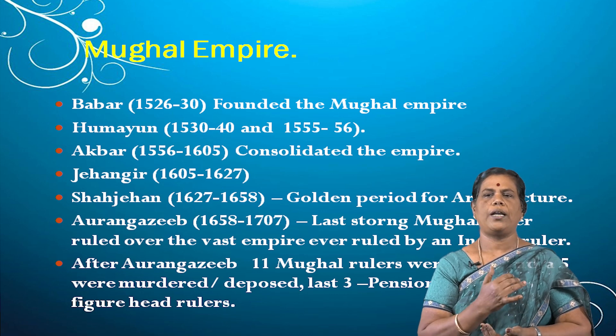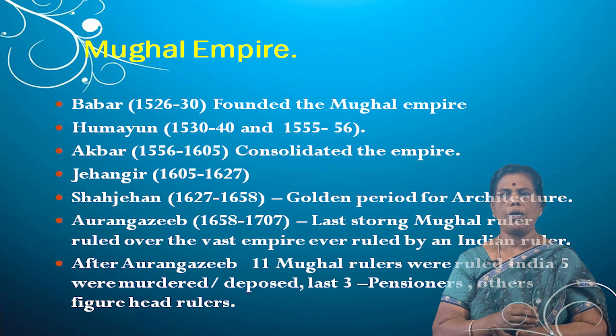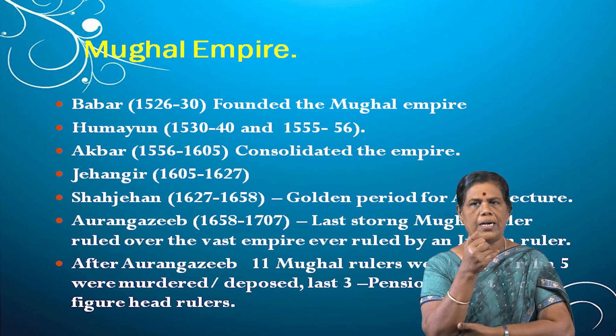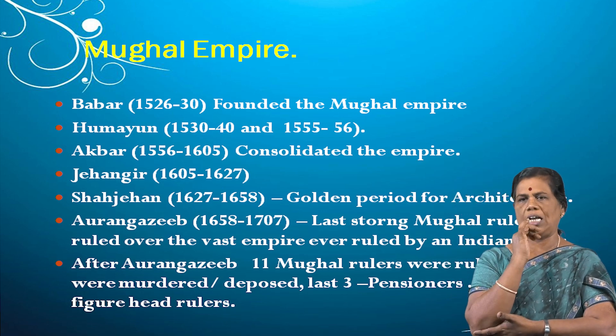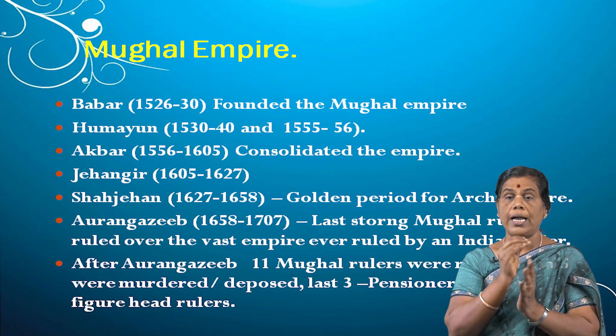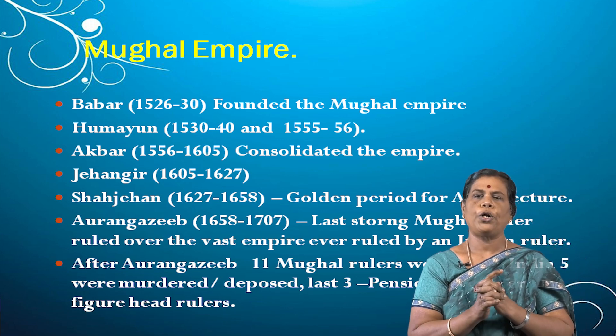Aurangzeb ruled India from 1658 to 1707. He was the last strong Mughal ruler, ruling over the vastest empire ever ruled by an Indian ruler. After Aurangzeb, 11 Mughal rulers ruled India; among them 5 were murdered or deposed, and the last 3 were British pensioners. So the notable Mughal rulers were Babur, Humayun, Akbar, Jahangir, Shah Jahan, and Aurangzeb. Now we are going to see about the disintegration, which began during the reign of Aurangzeb.